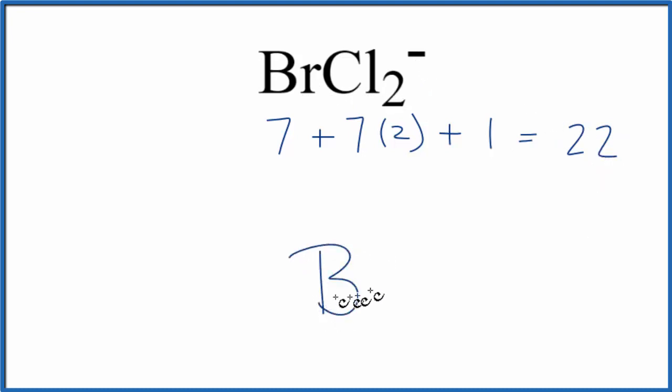We'll put Bromine in the center, and then we'll put Chlorine atoms on either side. Next, we're going to take and put electrons between the atoms. That'll show the chemical bond there. So we'll put a pair of electrons here. Now the Bromine and the Chlorine are bonded, and we'll put a pair right here.